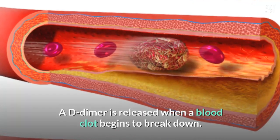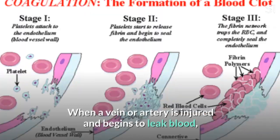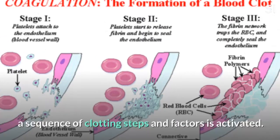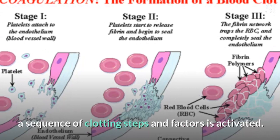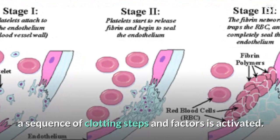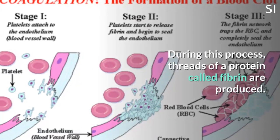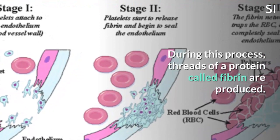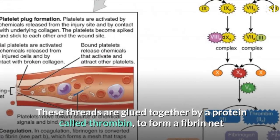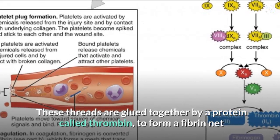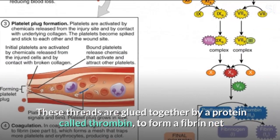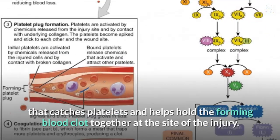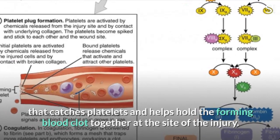When a vein or artery is injured and begins to leak blood, a sequence of clotting steps and factors is activated. During this process, threads of a protein called fibrin are produced. These threads are glued together by a protein called thrombin to form a fiber net that catches platelets and helps hold the forming blood clot together at the site of the injury.